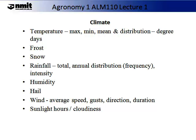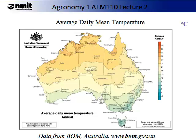Let us now become familiar with the way climate data is presented and learn about Australia's climate distribution. We will explore temperature, frost, snow, rainfall, humidity, hail, wind and sunlight. All of the weather data we shall discuss in this lecture are from the Bureau of Meteorology, or BOM for short. This is an excellent resource for agronomy and one I would encourage you to become familiar with.